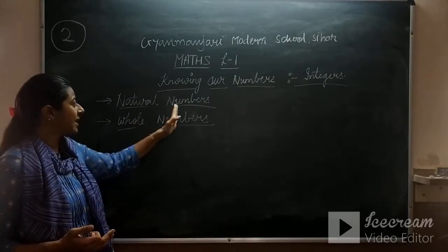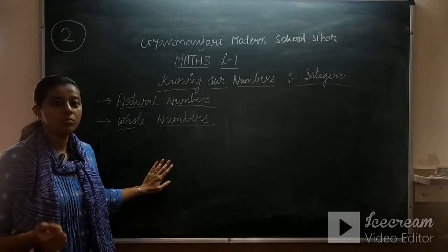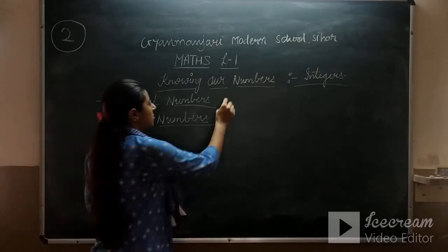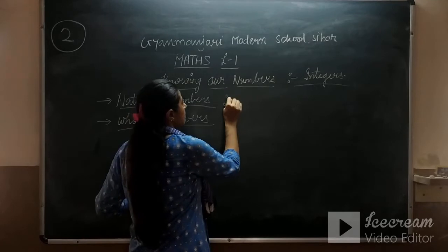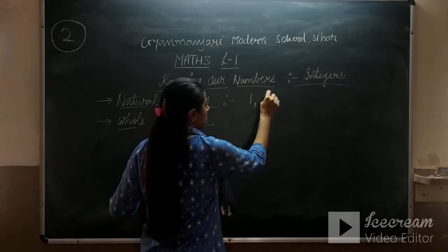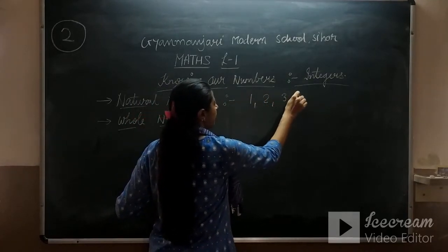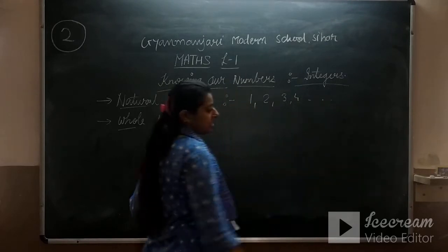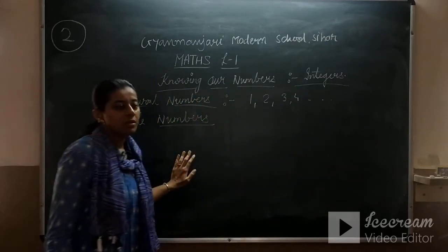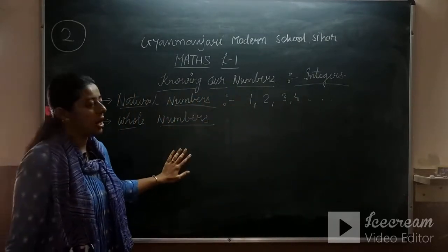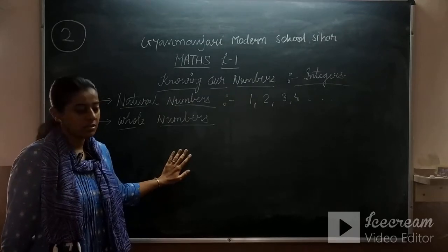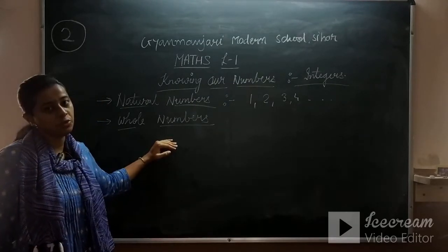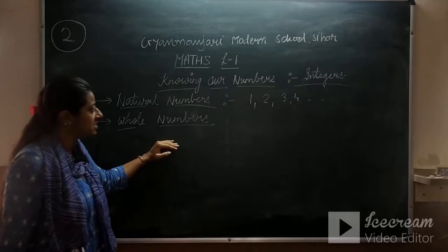The first topic is natural numbers. Now what are natural numbers? The numbers that start from 1, 2, 3, 4 and go up to infinity — these all numbers are known as natural numbers. Then comes whole numbers, which you have already studied in this standard.